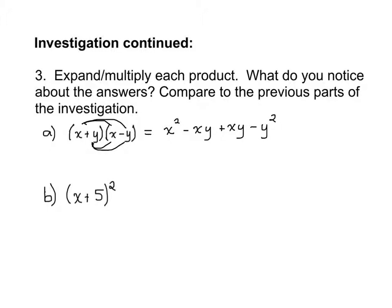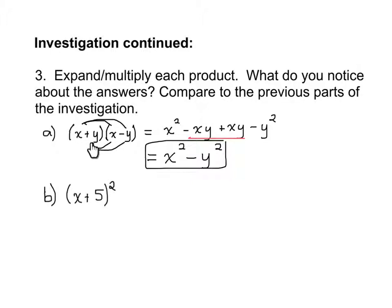There are two like terms we can combine. Negative xy plus xy equals zero xy, so they cancel out like a zero pair, and we are left with x squared minus y squared. If we look at these two terms, we have a perfect square in the first term and a perfect square in the second term, with subtraction in between. Back to our original binomials, we had x plus y times x minus y — so there is a pattern there that we are going to look at in the next slide.